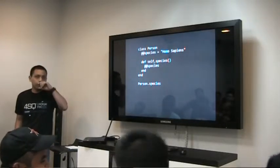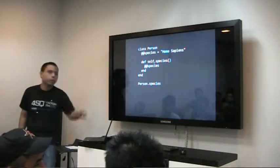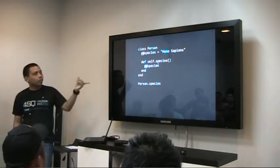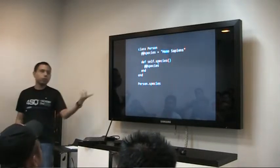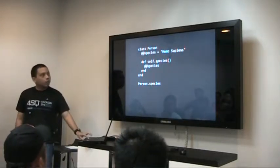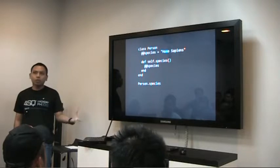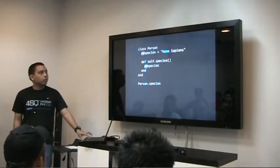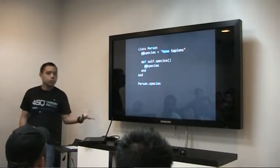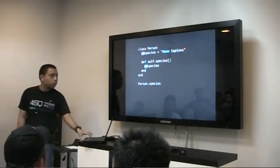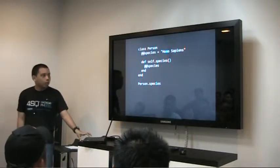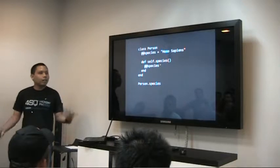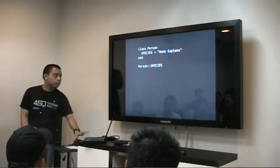Just prepend self-dot to the method name — that's one of the ways. There's also another way using self. A class method is a method you can call without having an instance. Same thing with the class variable — you just use two at-symbols, which denotes that it is a static or class variable. Static is coming from other languages like Java.